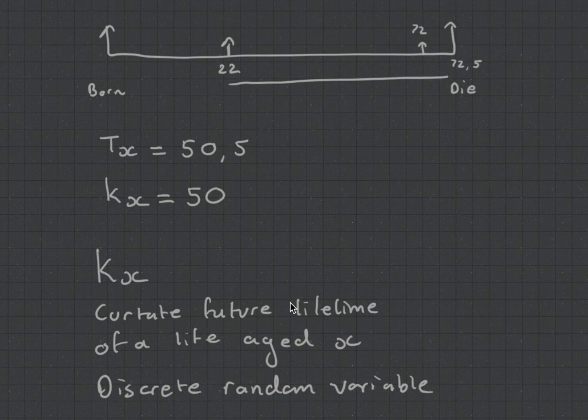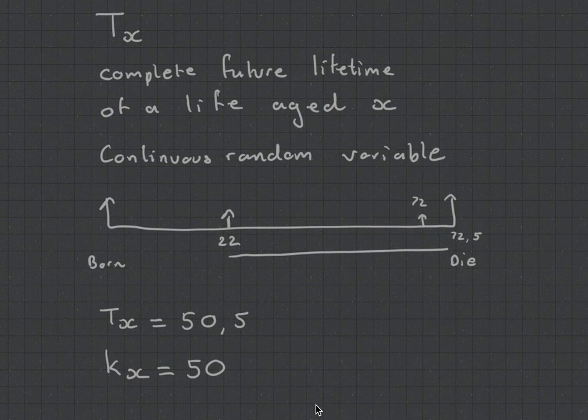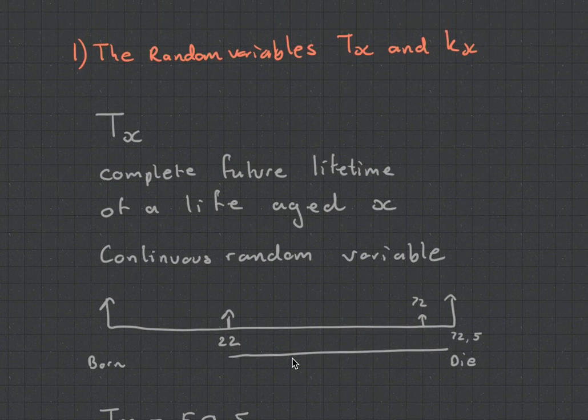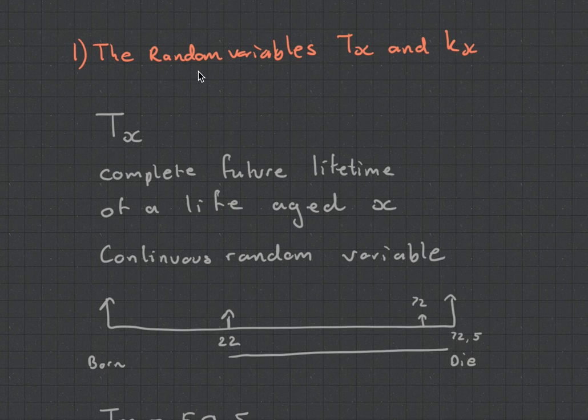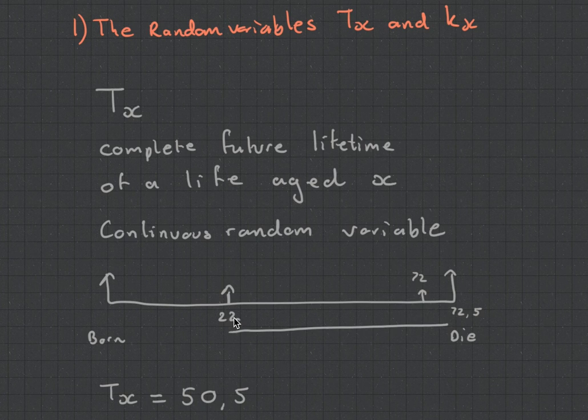It was done because back in the day, they didn't have super advanced computers, but now with today's technology, you can see continuous random variables are getting more and more used over the curtailed discrete random variables. That is the random variables of Tx and Kx. Key things to remember: they're random variables, and you want to look at the time between the start point, which is x, and the end point, which is the random unknown point.